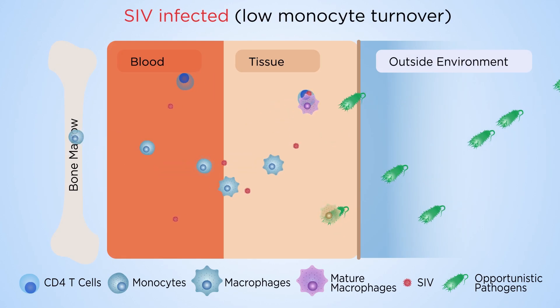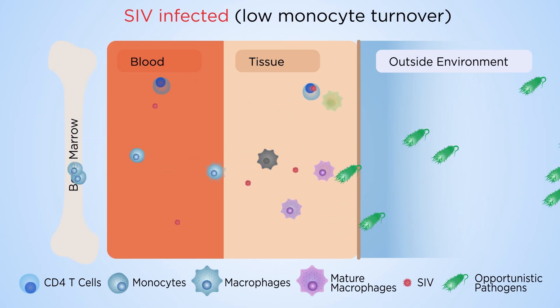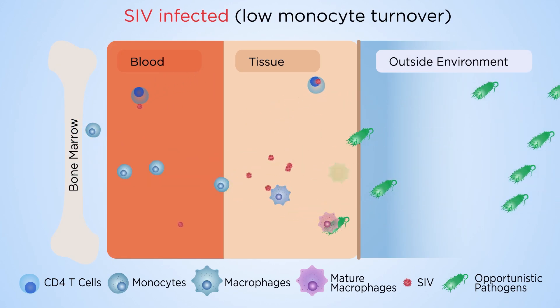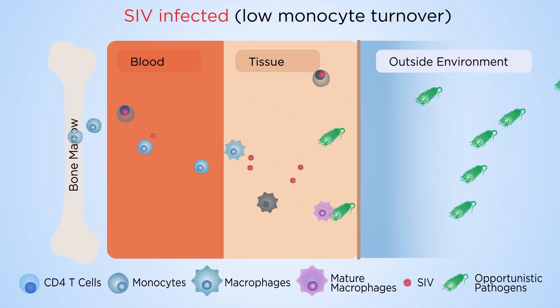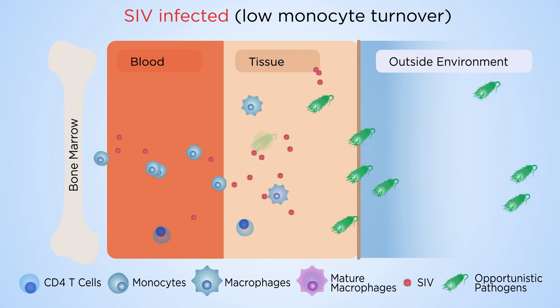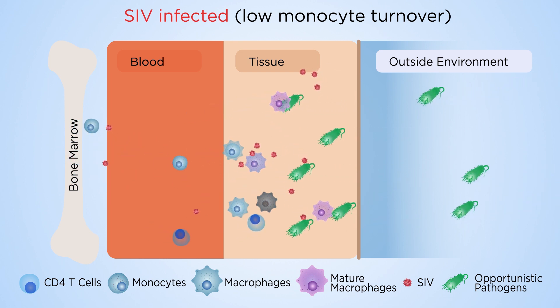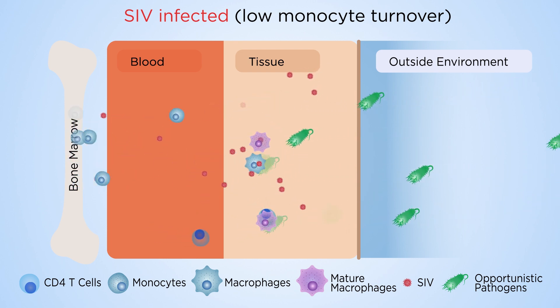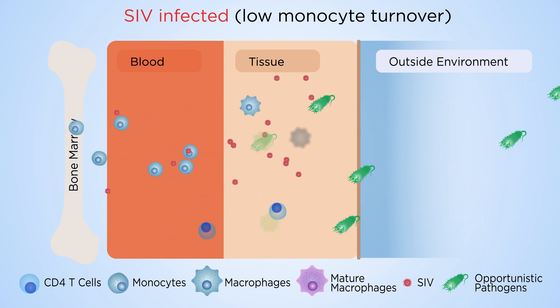Next, increasing numbers of tissue macrophages die from HIV infection. The bone marrow increases production of monocytes in an attempt to replace them.